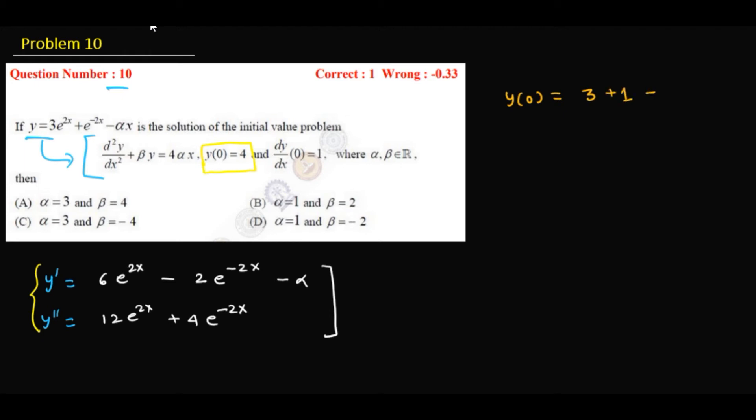From here, just put y'(0) = 1. So y'(0) is 6 - 2 - alpha = 1, so from this you'll get alpha = 3. Now the value of beta will come if you substitute this equation.